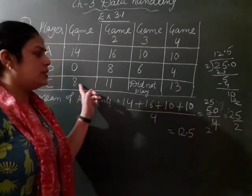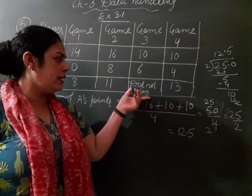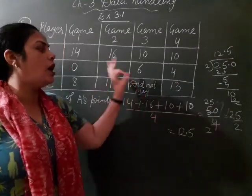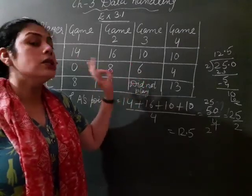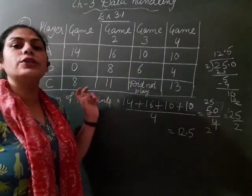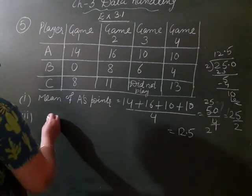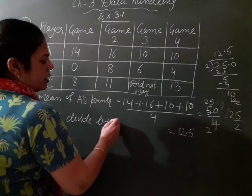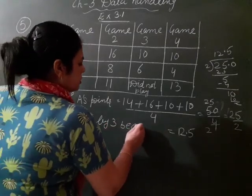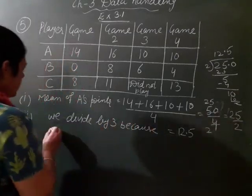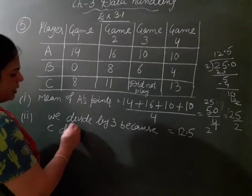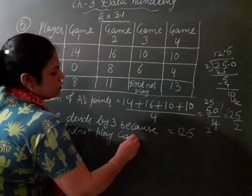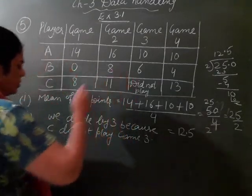Because C play 3 games. Game 3rd to usme play hi nahi kiya hai. So why we dividing by 4? Haan agar isme 0 play karta, 0 score aata, to hum 4 se divide karte hai. So we divide by 3 because C did not play game 3. You see one game play hi nahi kiya game 3rd, clear?